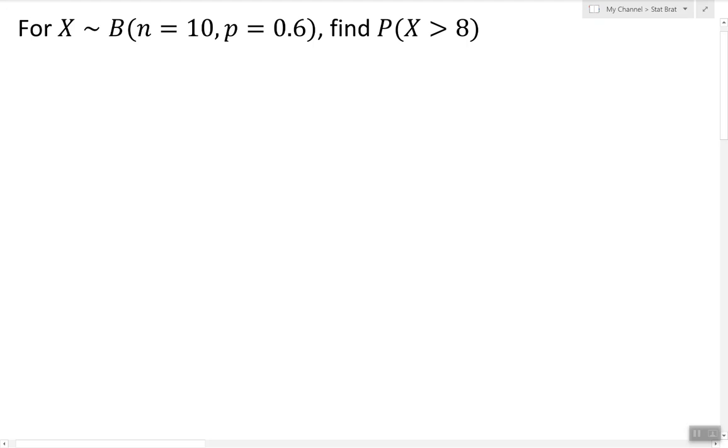The most important formula to remember when working with binomial random variables is the following. The probability of X being equal to any given value K can always be found by using this formula: n choose K times p, the probability of success, to the power K times q, the probability of failure, to the power n minus K.